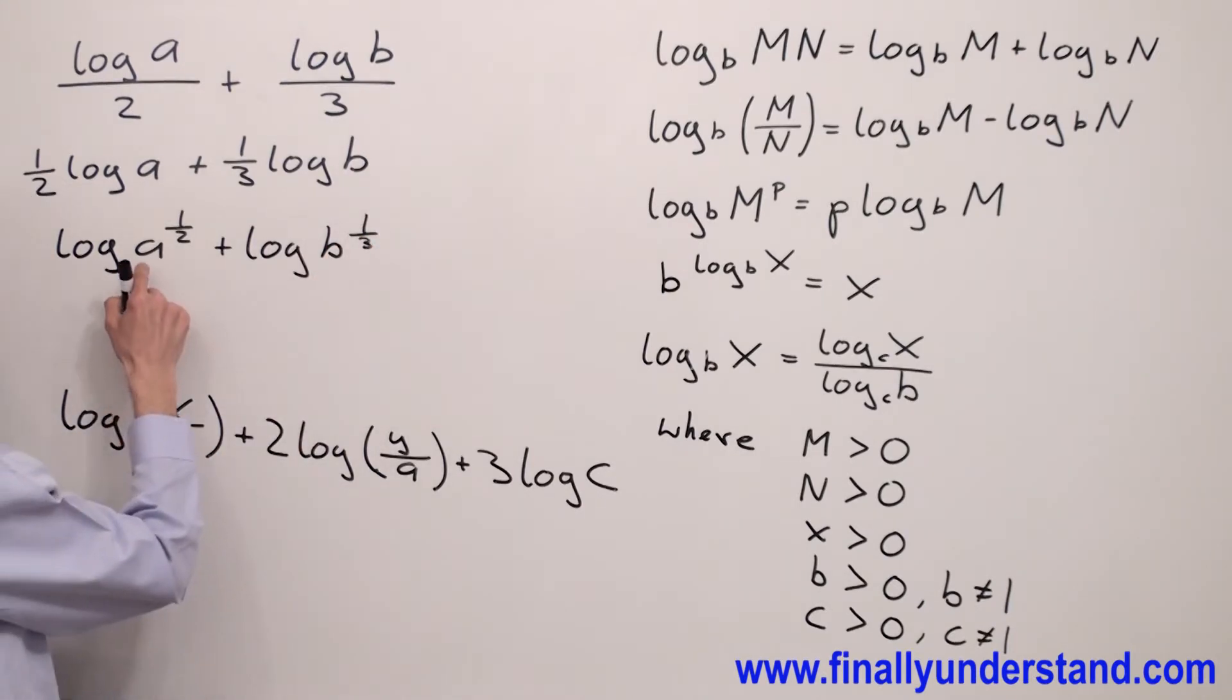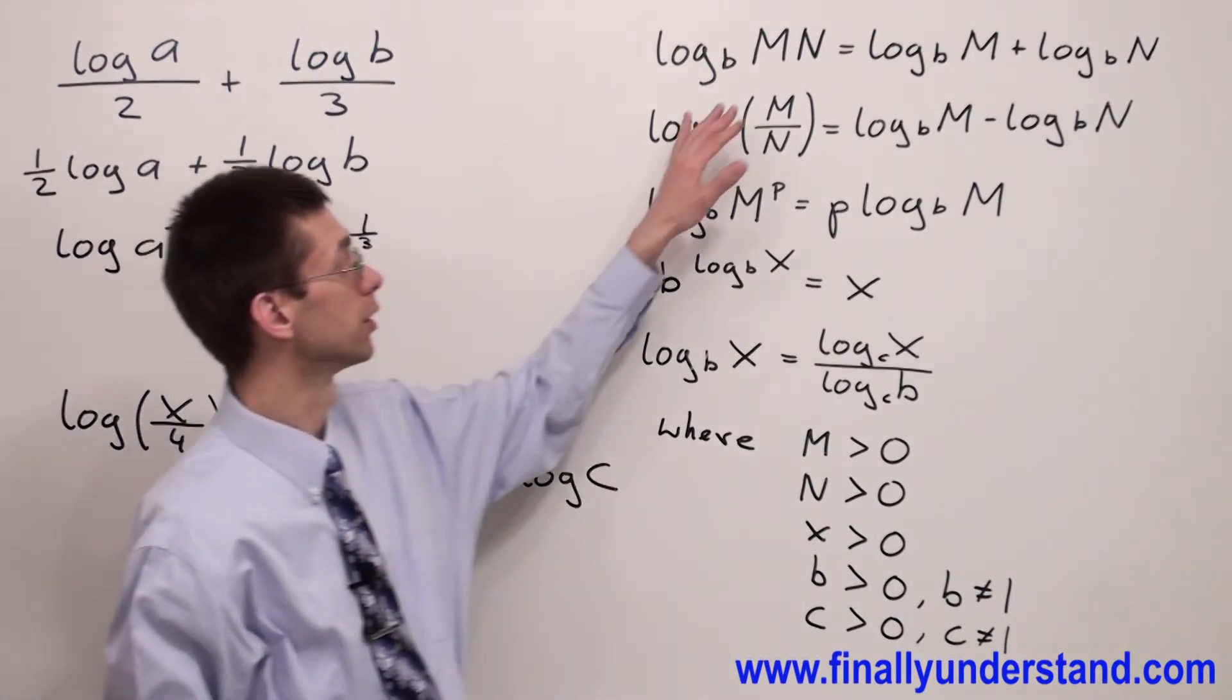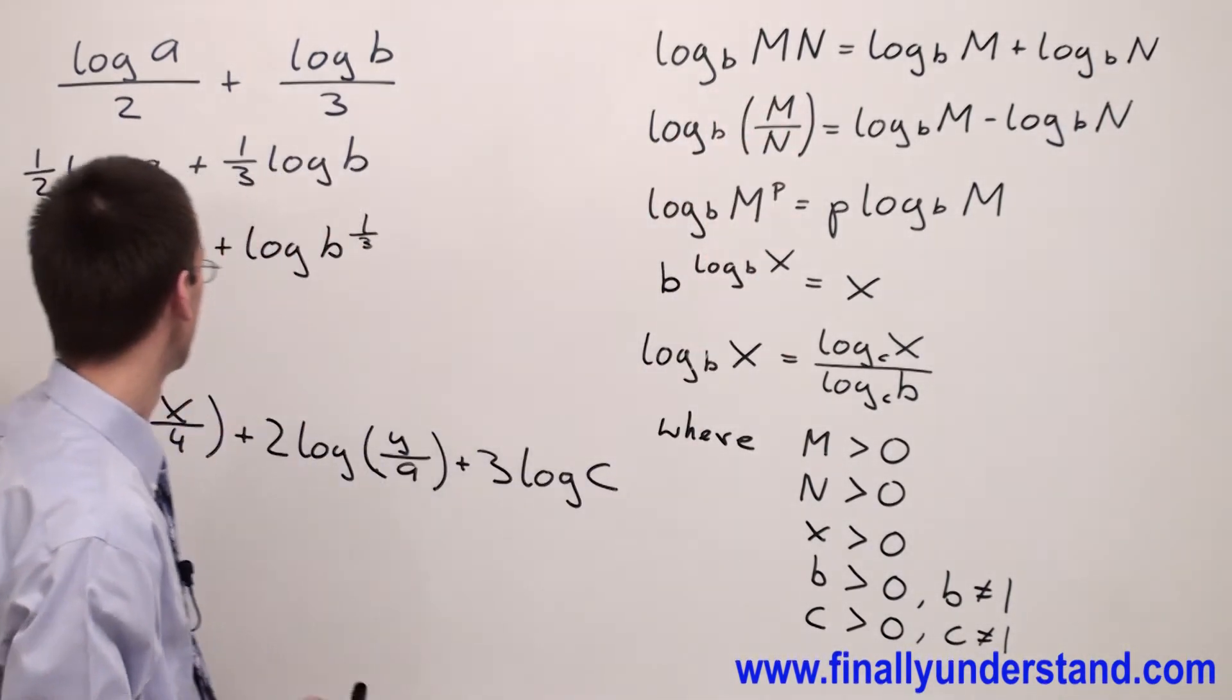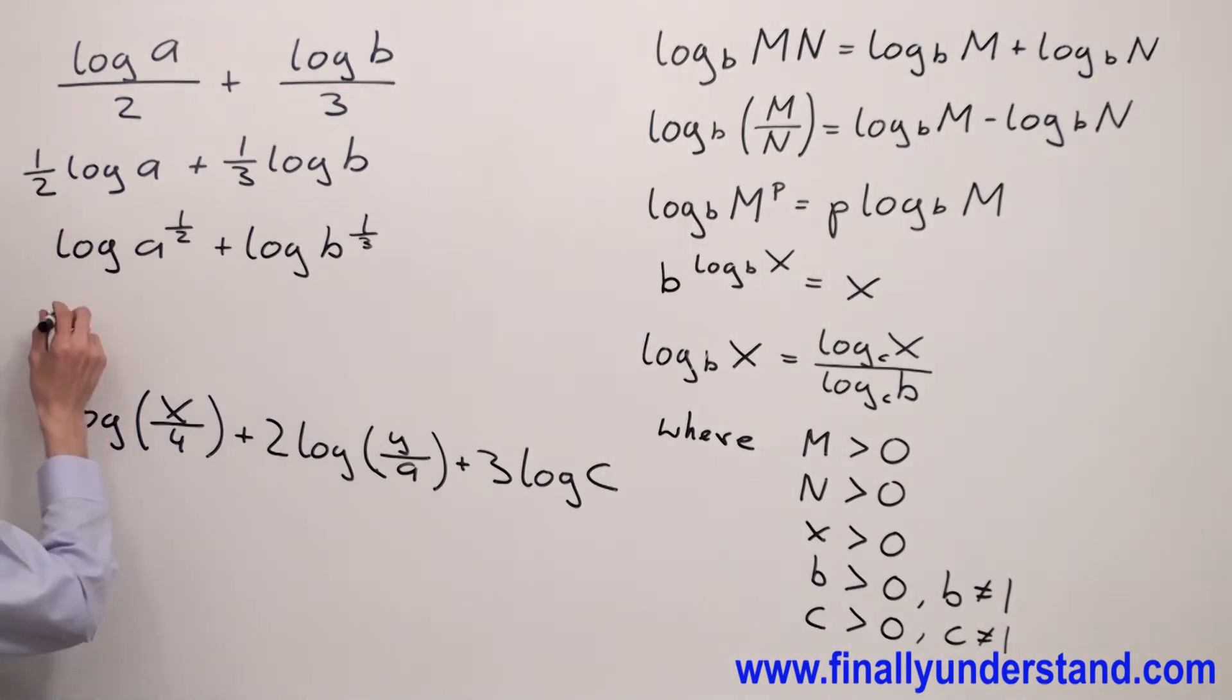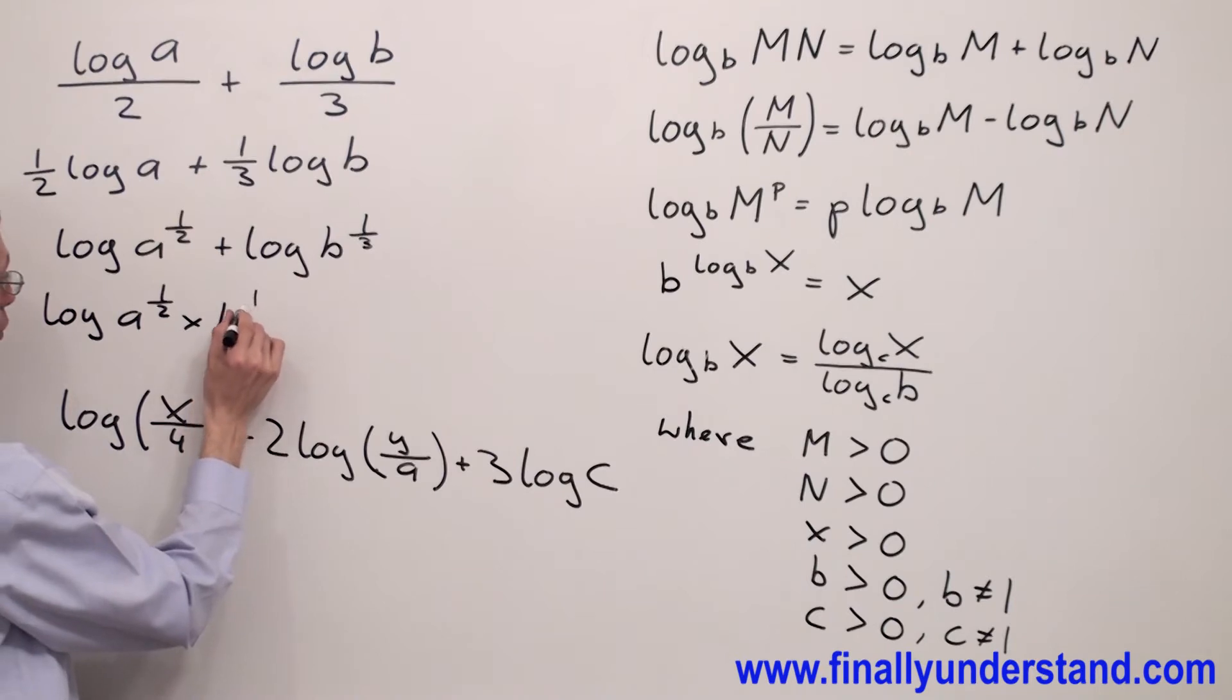Because this is the sum of the logarithms, I'm going to use the property for the product. And I'm going to have log a 1 half times b 1 third inside of the parenthesis.